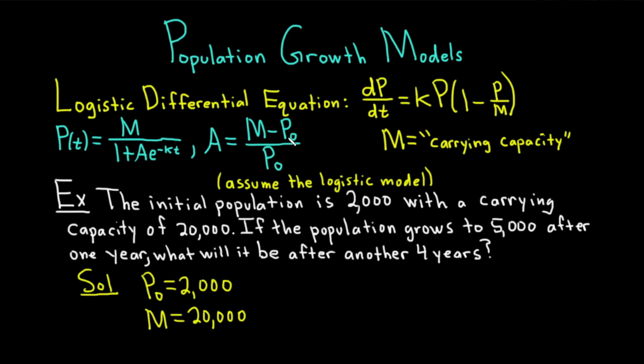A is (M minus P₀) over P₀, which is (20,000 minus 2,000) divided by 2,000. This is 18,000 over 2,000, which equals 9. So A equals 9.